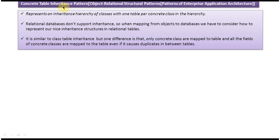Today I will cover the concrete table inheritance pattern. This pattern belongs to object-relational structural patterns, which belongs to patterns of enterprise application architecture. The explanation: it represents an inheritance hierarchy of classes with one table per concrete class in the hierarchy.